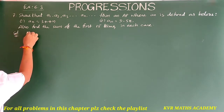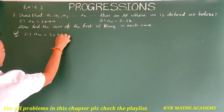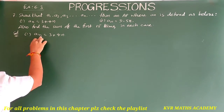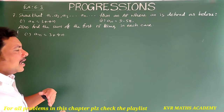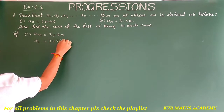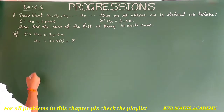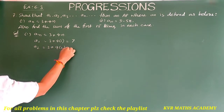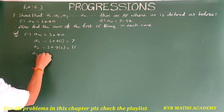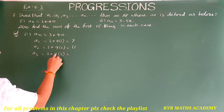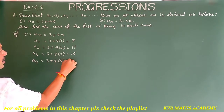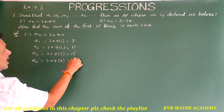Solution. Let us take the first one: An is equal to 3 plus 4n. Let us take n values from natural numbers: 1, 2, 3, 4, and so on. A1 is equal to 3 plus 4 into 1, that is 4 plus 3, which is 7. A2 is equal to 3 plus 4 into 2, that is 8 plus 3, which is 11. A3 is equal to 3 plus 4 into 3, that is 12 plus 3, which is 15. A4 is equal to 3 plus 4 into 4, that is 16 plus 3, which is 19. Up to 4 terms is enough.